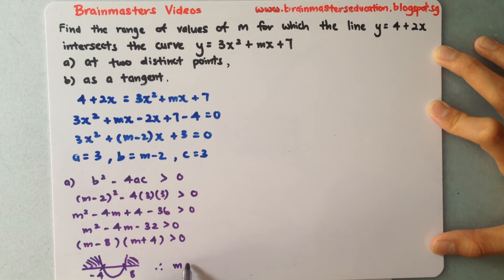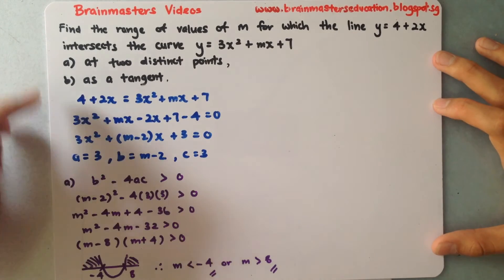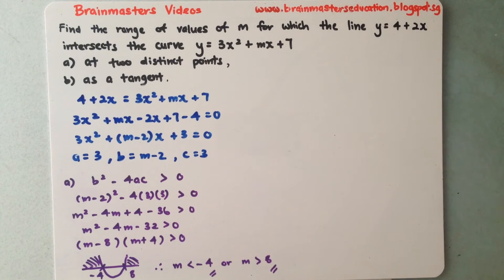m < -4 or m > 8. These are the values for intersection at two distinct points.